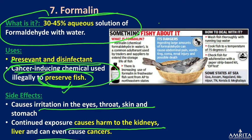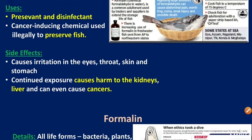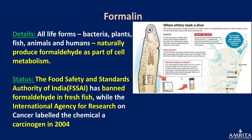There is increasing use of formalin in fresh water fish sent from Andhra Pradesh to northeastern states to maintain shelf life during transit. Although the fish appear relatively fresh on arrival, formalin can cause abnormal pain, vomiting, cancer, and kidney damage.